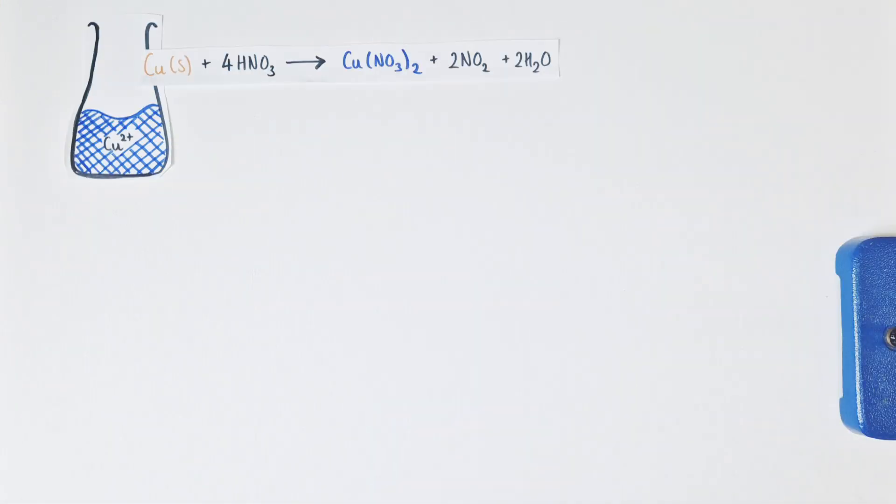That original reaction between the copper of the brass nail and the concentrated nitric acid was trying to liberate copper 2+ ions into solution. We also generate some nitrogen dioxide gas and some water which is not so relevant. The key thing was to create a solution of copper 2+ ions and this is the key reaction taking place.